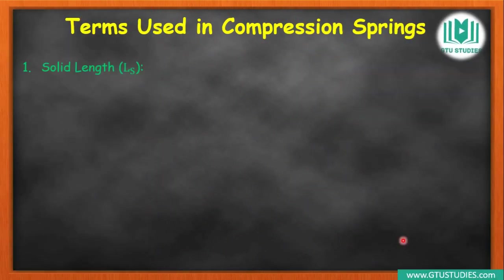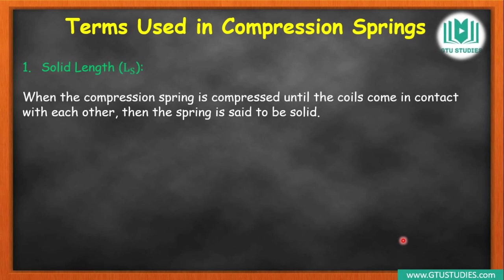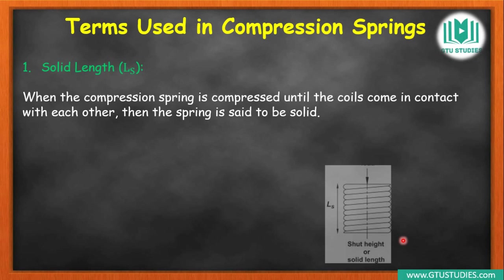The first term is solid length. Why is it called solid length? When you observe the shape of a spring and you fully compress it — applying a load from the top and compressing until full compression occurs — check the figure: we fully compress the spring like this.